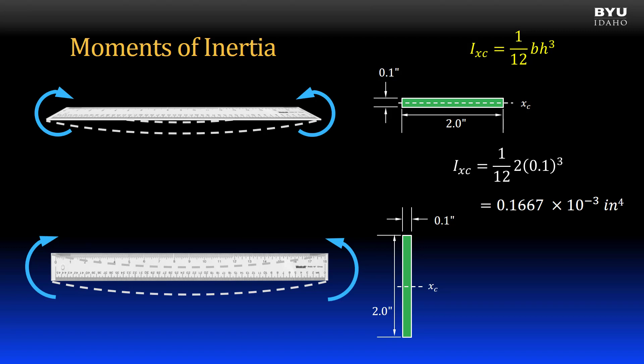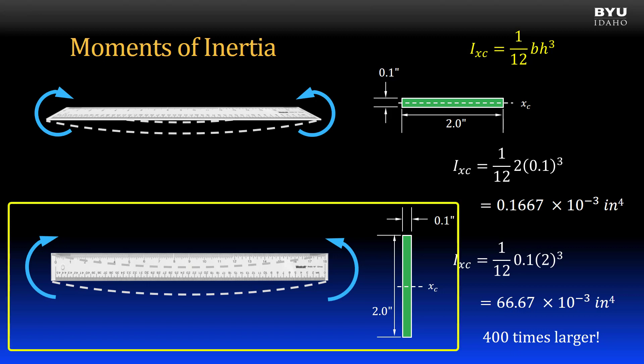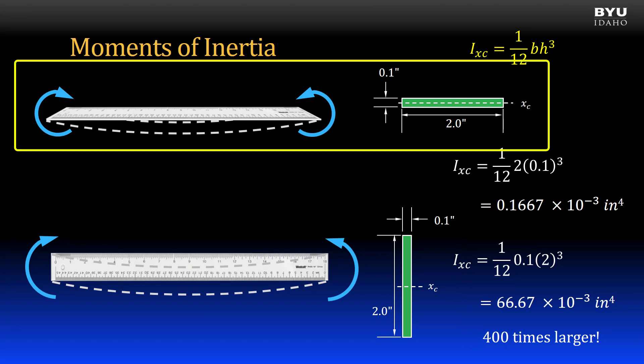Let's now look at bending the ruler the hard way. The axis is perpendicular to the long dimension of the cross-section. So, when calculating the moment of inertia, the base, which is parallel to the axis, is now 0.1 inches. And the height, which gets cubed, is 2 inches. We get a moment of inertia of 66.67 times 10 to the negative 3. That is 400 times bigger than the moment of inertia about the other axis. So, essentially, what we call the strong orientation has 400 times the resistance to bending relative to what we call the weak orientation. That is the impact of moment of inertia.